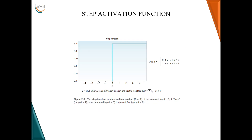The second operation inside the neuron function is the step activation function. Whatever output z = Σ(xᵢwᵢ) + b I got, I apply the activation function represented by sigma. For the step activation function, the output is 0 if wx + b ≤ 0, and the output is 1 if wx + b > 0. Based on these conditions, the output will be generated as 1 or 0.